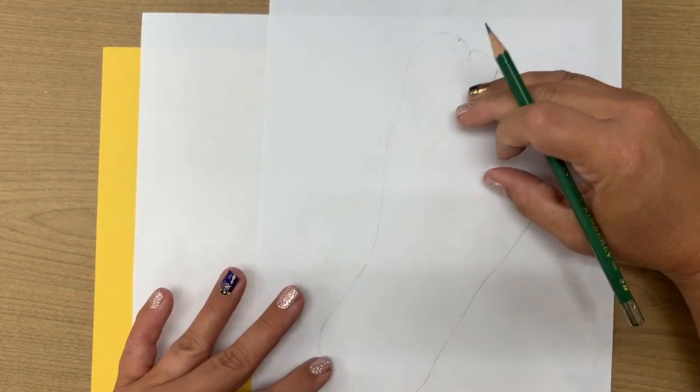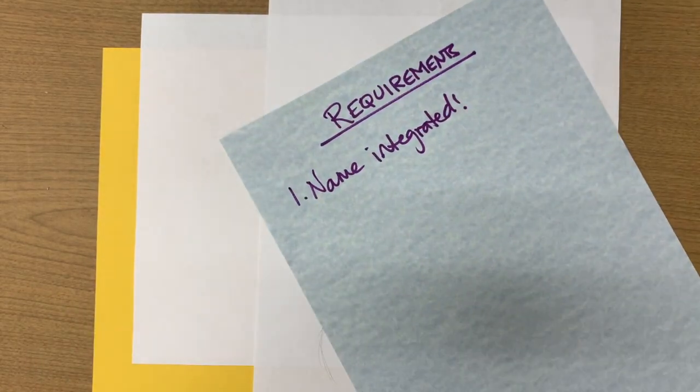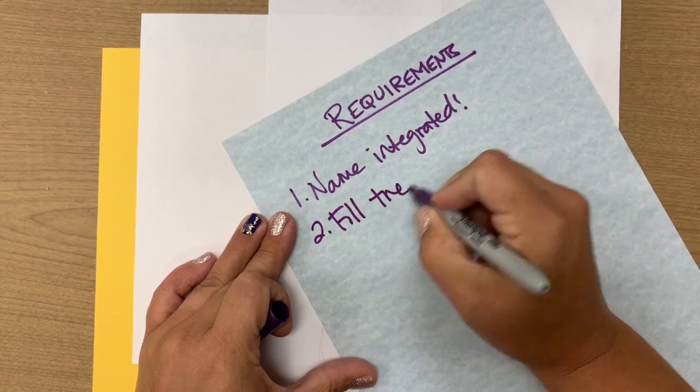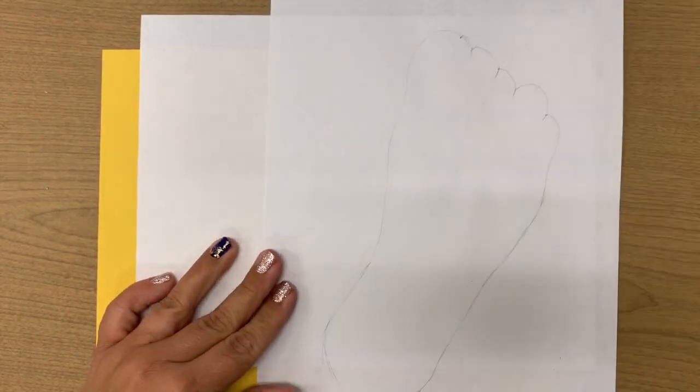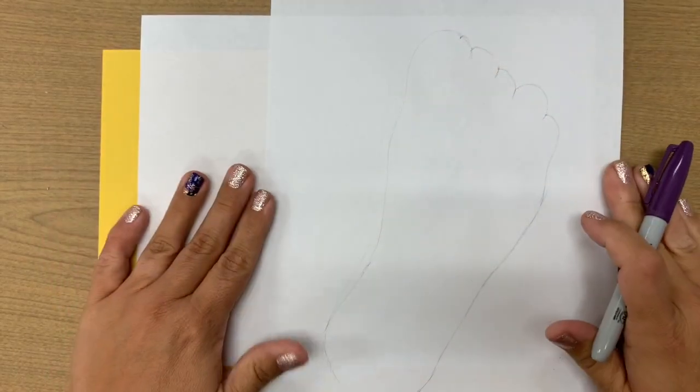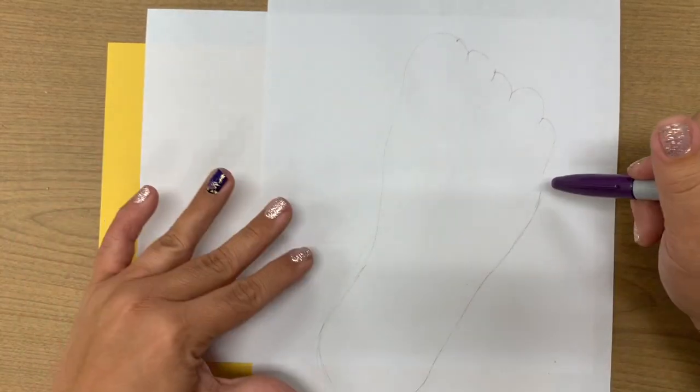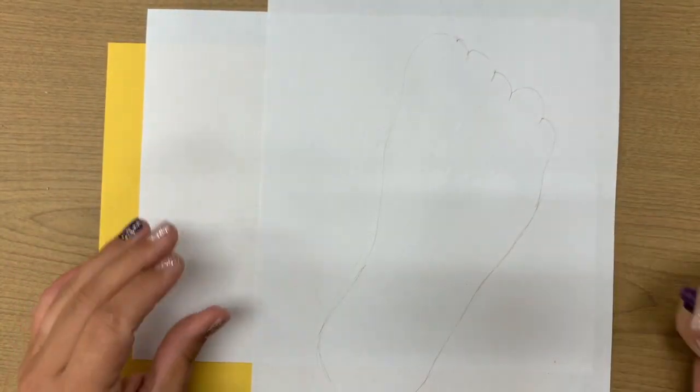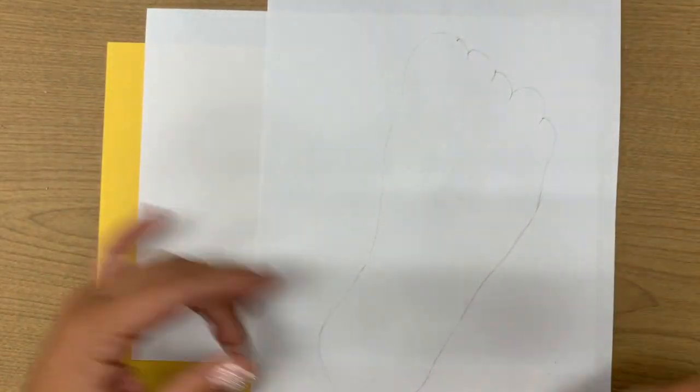The second requirement is that you fill the paper. However you decide to design this, I want it to be full. It could be simple - you could just fill the inside of your foot and then color the background. You could layer it with magazines that you peel apart and stretch and piece in and glue down, or just color it with colored pencil. You could make designs - whatever you want to do, show off your creativity.